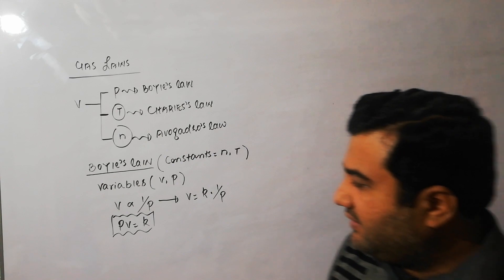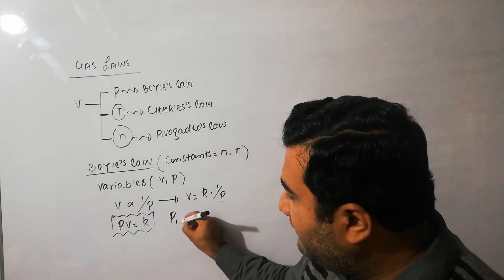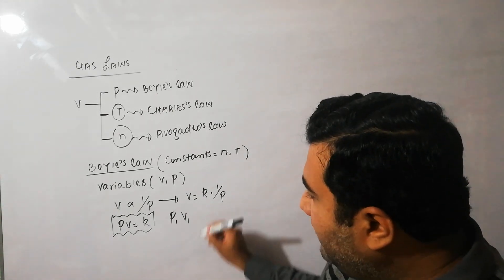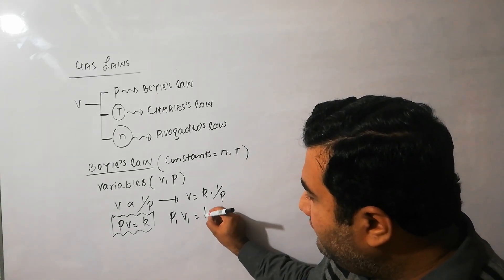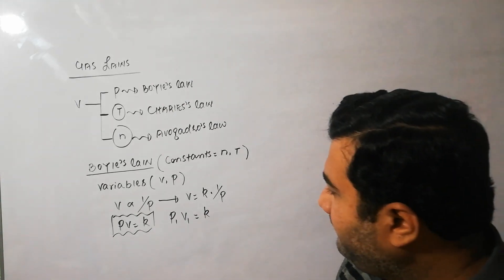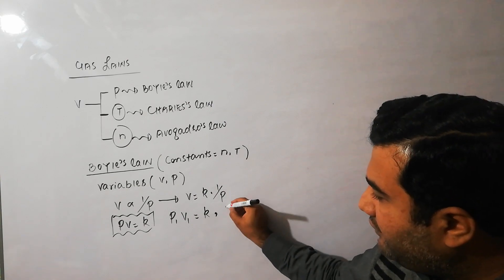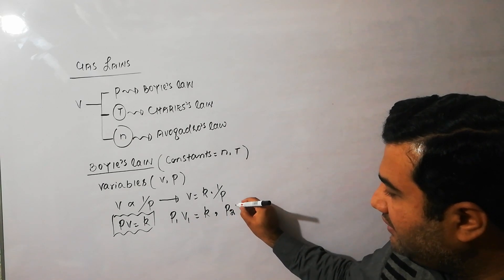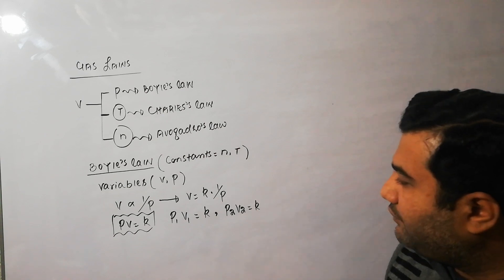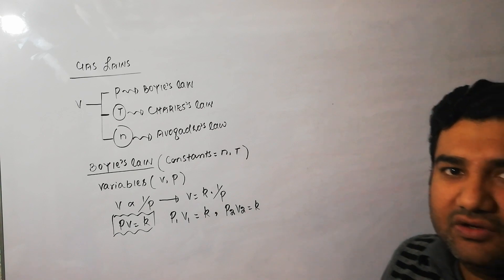Suppose a gas has initial pressure P1 and initial volume V1. Then the product P1 × V1 equals constant K. Now if you change the pressure to P2 and the volume changes to V2, then the product P2 × V2 also equals K. Since both sides equal K, we can write P1V1 = P2V2. This is the second mathematical form of Boyle's Law.